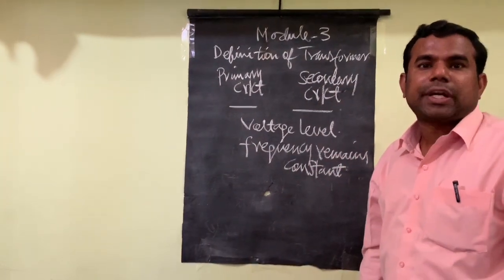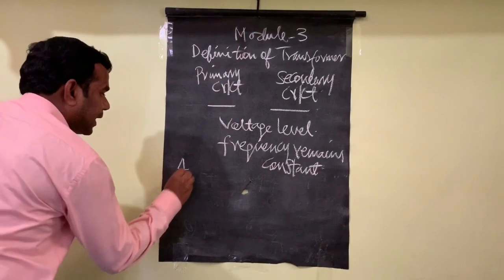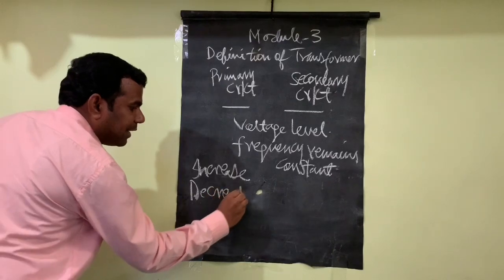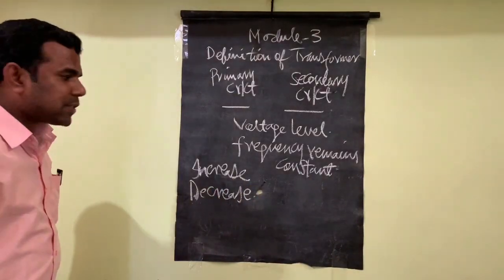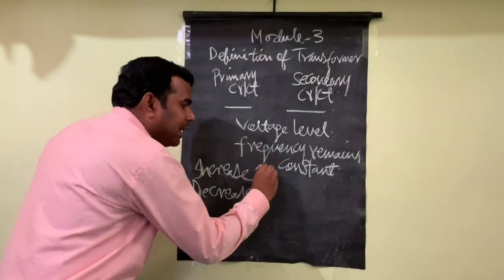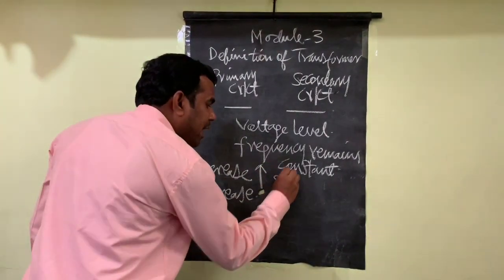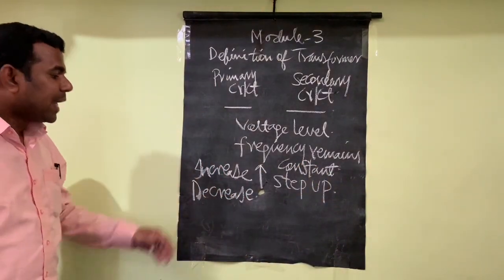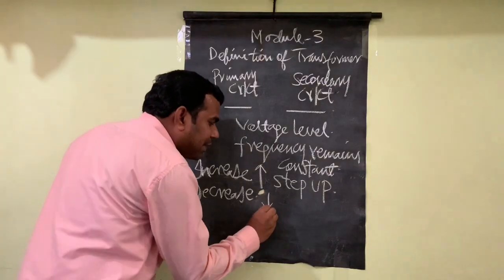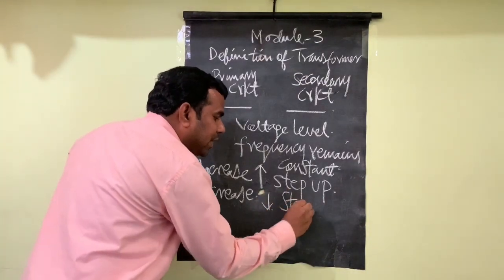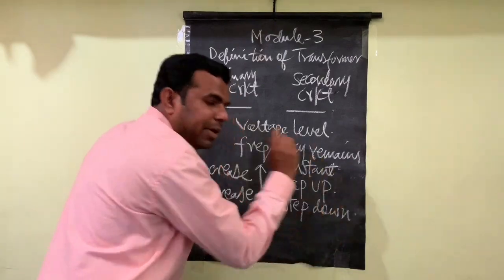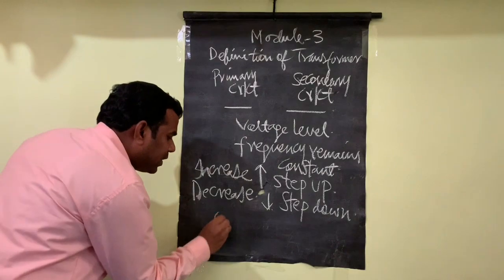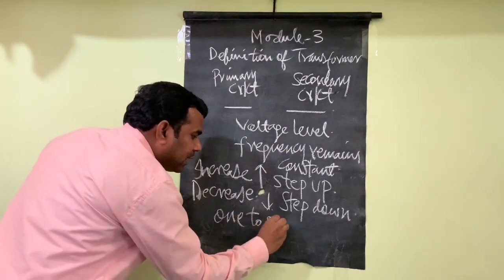The basic use of a transformer is to increase or decrease the voltage level. If a transformer is used to increase the voltage level, it is referred to as a step up transformer. If it is used to decrease the voltage level, it is referred to as a step down transformer. If the voltage remains the same, that transformer is called a 1-to-1 transformer.